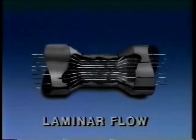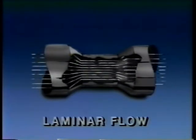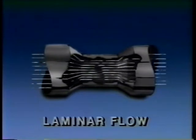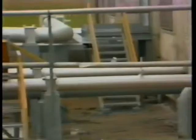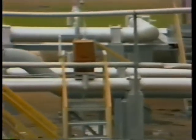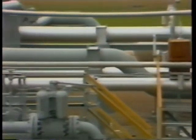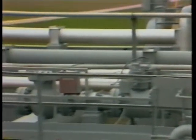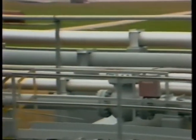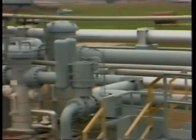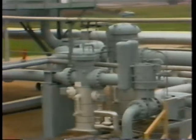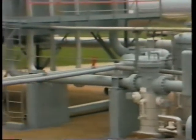Fluid resistance acts like friction because it slows the fluid down and causes a drop in pressure. The amount of resistance a fluid encounters depends on the size of the pipe, its length, and the number of turns and bends the fluid has to go through. Resistance also depends on how clean the pipe is — any obstructions will increase resistance and interfere with the flow.